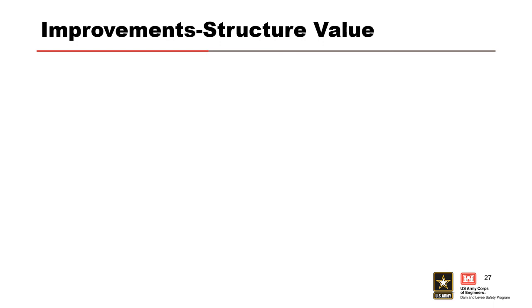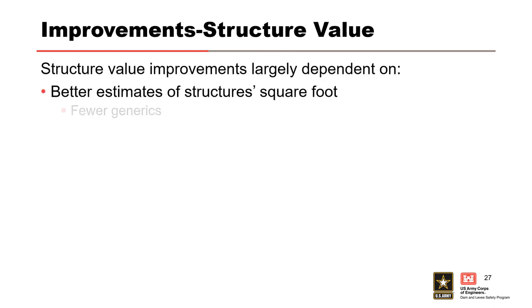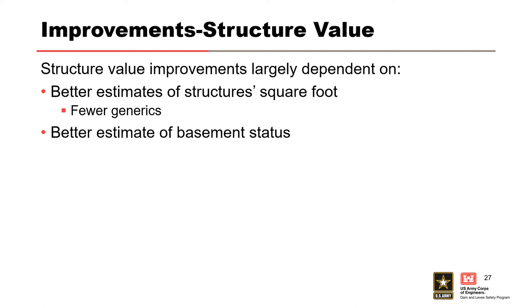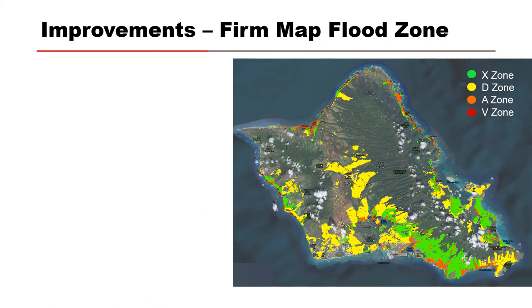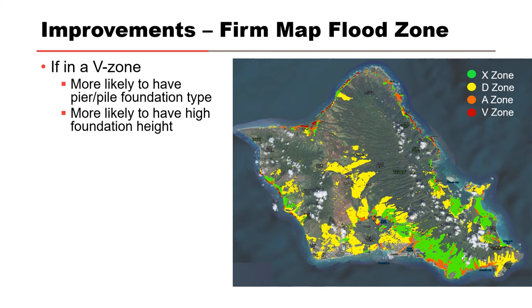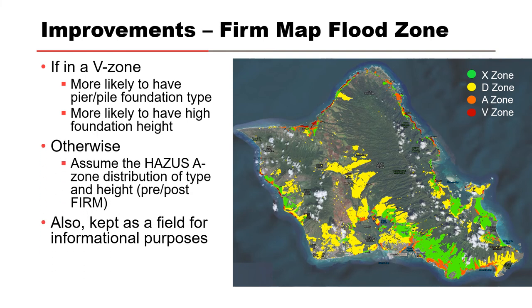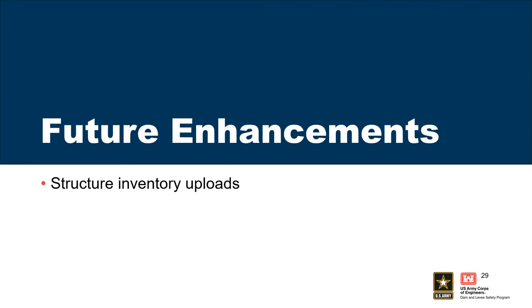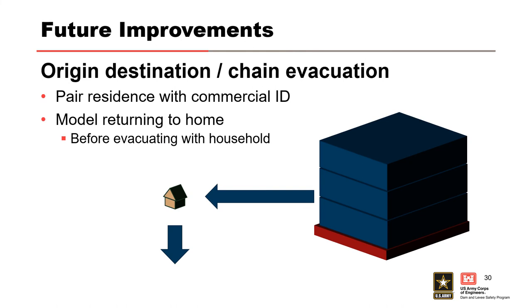Improvements on structure value were dependent on structural square footage, allowing better structure value estimates beyond what was there previously. There are fewer generics, better estimates of basement status — which is very important in both damage and life-loss assessments — along with index price levels, depreciation of values, and improvements from FIRM flood map zones. FIRM zones provide better information — for example, structures in the V zone are more likely to have pier-and-pile foundations, which push them up higher and result in different foundation heights and stability criteria.